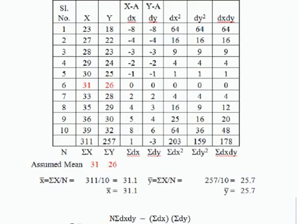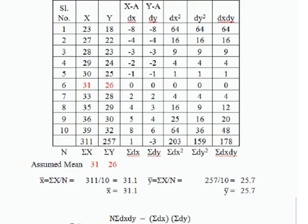Subtract the assumed mean 26 from each Y value to get dy: 18−26=−8, 22−26=−4, 23−26=−3, 24−26=−2, 25−26=−1, 26−26=0, 28−26=2, 29−26=3, 30−26=4.